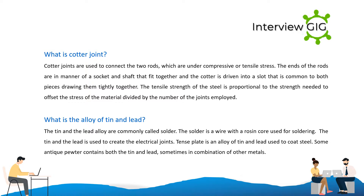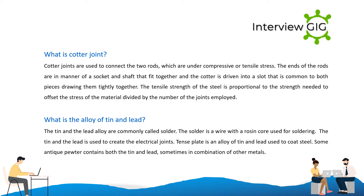What is the alloy of tin and lead? The tin and lead alloy is commonly called solder, a wire with a rosin core used for soldering to create electrical joints. Terne plate is an alloy of tin and lead used to coat steel, and some antique pewter contains both tin and lead, sometimes in combination with other metals.